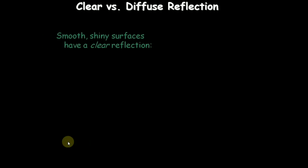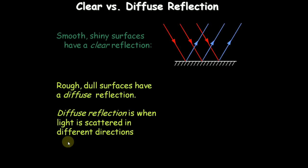Smooth shiny surfaces have clear reflection. Rough dull surfaces have a diffuse reflection. Diffuse reflection is when light is scattered in different directions. We are seeing the different directions, the scattered light.